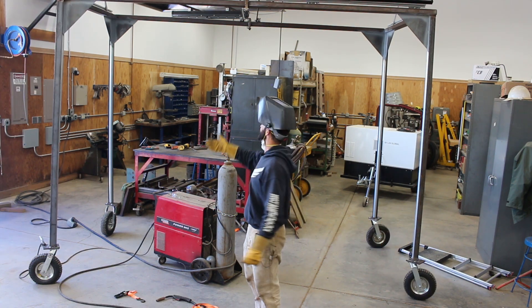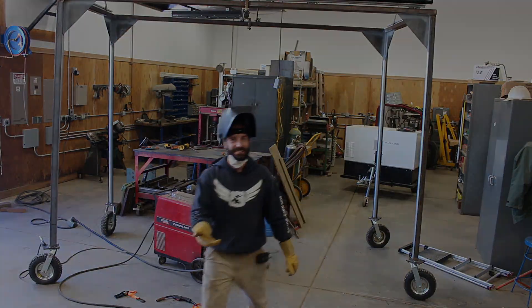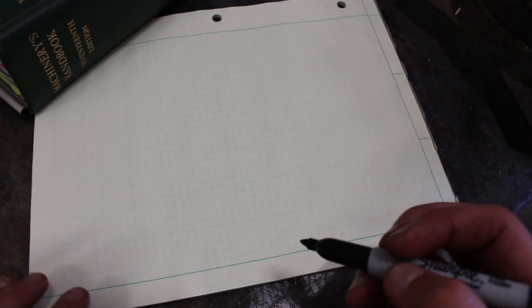And that's how you sister legs on a structure that has failed due to bending. Now for the calculation to see how we could have avoided this in the first place. Here's our structure.